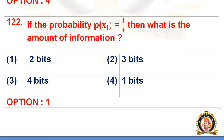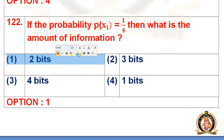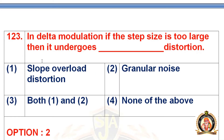Question 122: If the probability P(xi) = 1/4, then what is the amount of information? Options are 2 bits, 3 bits, 4 bits, and 1 bit. The right option is the first option, that is 2 bits. If P(xi) = 1/4, then 2 bits of information is required.